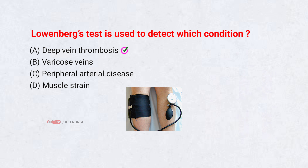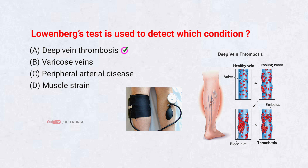Deep vein thrombosis. Loewenberg's test is used to detect deep vein thrombosis. A blood pressure cuff is applied around the calf and inflated. Pain occurring at lower than normal pressure suggests the presence of a clot in the deep veins.